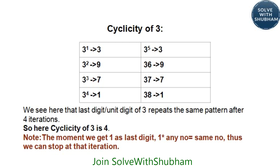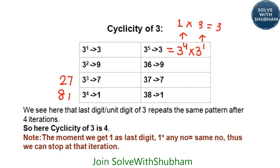Cyclicity of 3: 3 to the power 1 ends with 3, 3 to the power 2 ends with 9, 3 to the power 3 is 27 so ends with 7, and 3 to the power 4 is 81 so ends with 1. The moment you get 1, you can stop the iteration because the pattern must repeat. Since 3 to the power 5 equals 3 to the power 4 times 3 to the power 1, and 3 to the power 4 ends with 1 and 3 to the power 1 ends with 3, you get 3, then 9, then 7, then 1. So cyclicity of 3 is also 4.